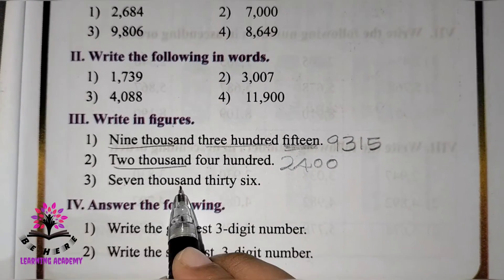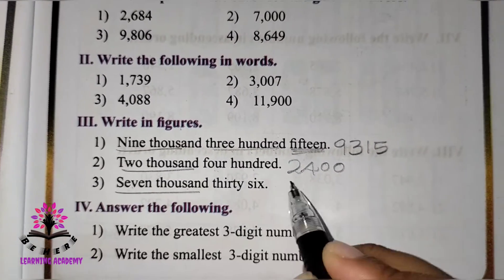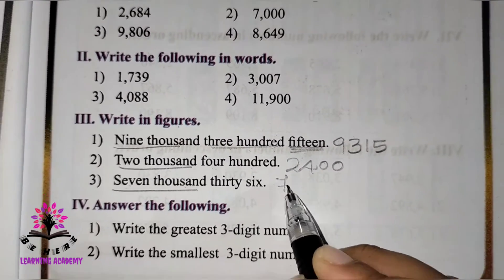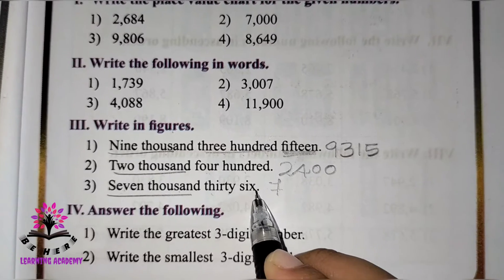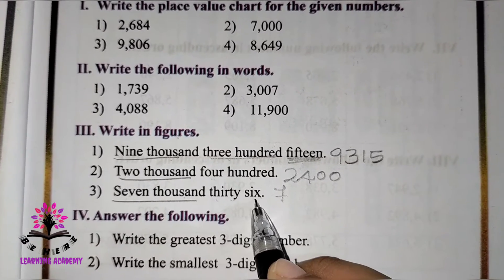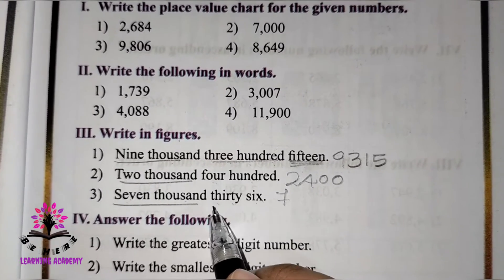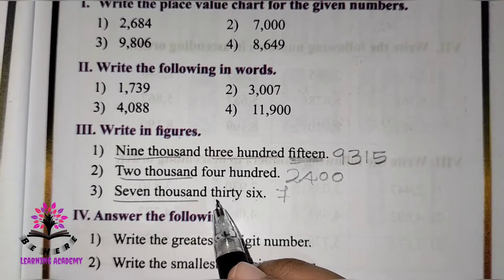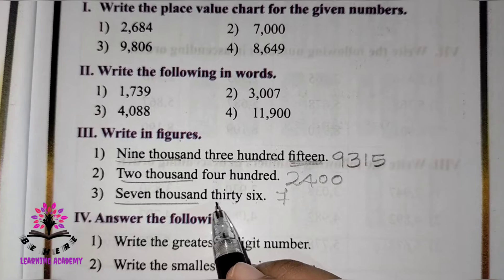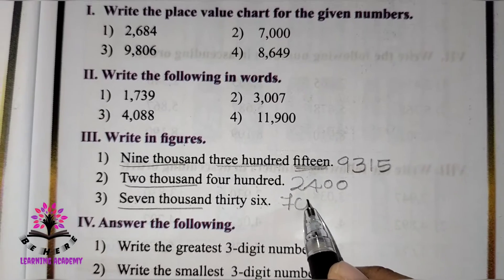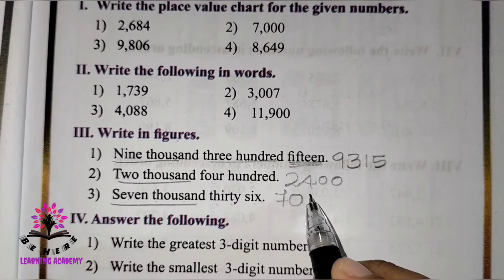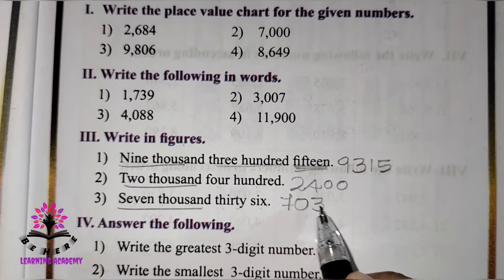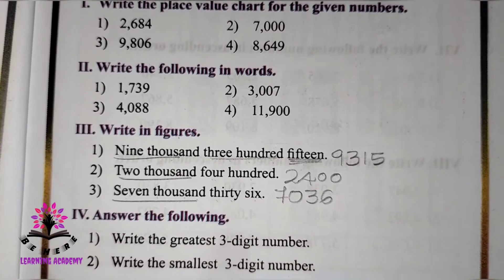Next: seven thousand and thirty-six — 7,036. They have not mentioned the hundreds place, so it will be zero. The answer is 7,036.